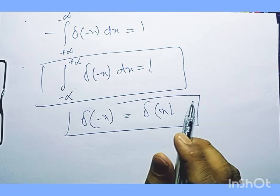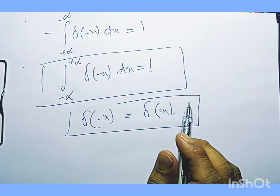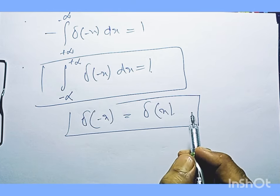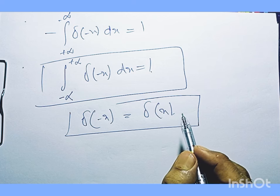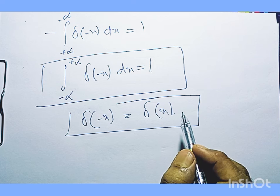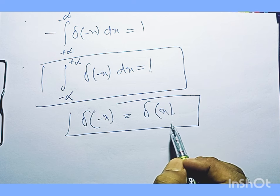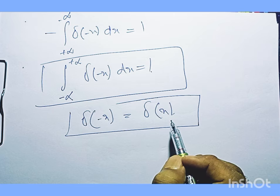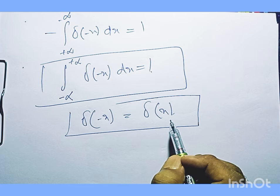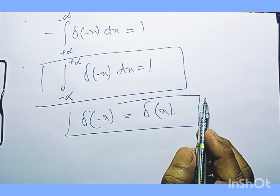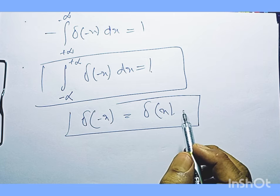This was the first property we have tried to obtain using the concept of even functions — that δ(-x) = δ(x).